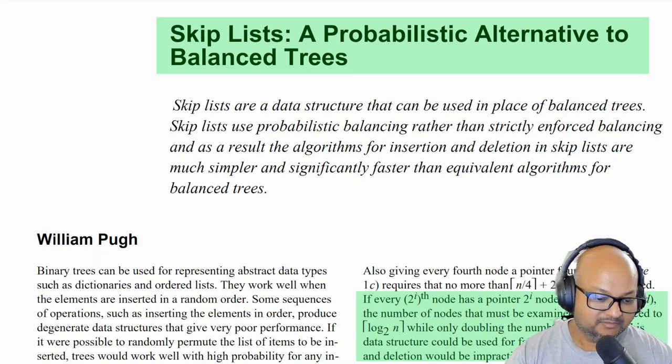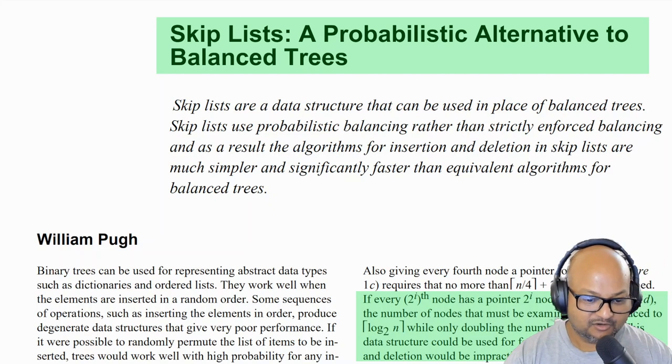Today I want to take a look at a paper that proposes a new data structure called a skip list. This was proposed by William Pugh back in 1990, and the reason I find it interesting is that although there's research and innovation going on in the area of data structures, most of it tends to be in the direction of more esoteric, more complex data structures.